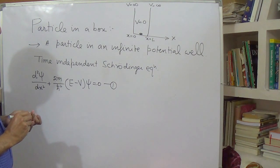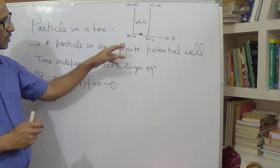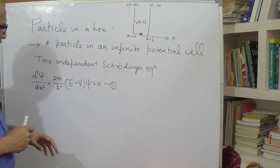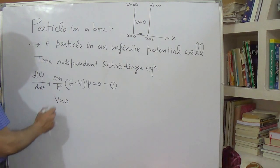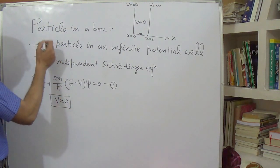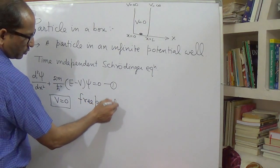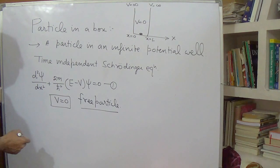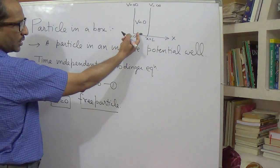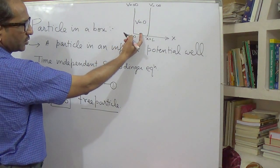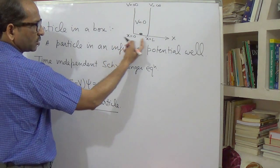A time-independent Schrödinger equation means the potential is independent of time — there is no time-dependent function related to the potential. We assume V=0, meaning the particle is free with no constraint. To find all eigenfunctions related to this free particle moving within the well, we apply boundary conditions.